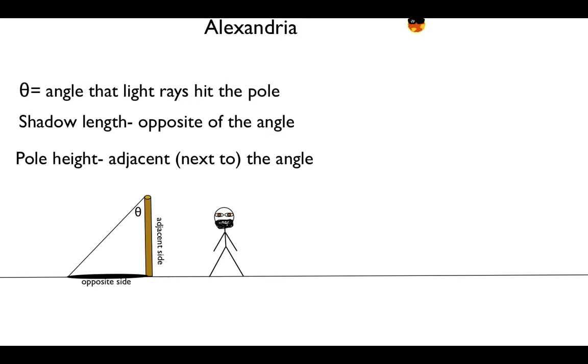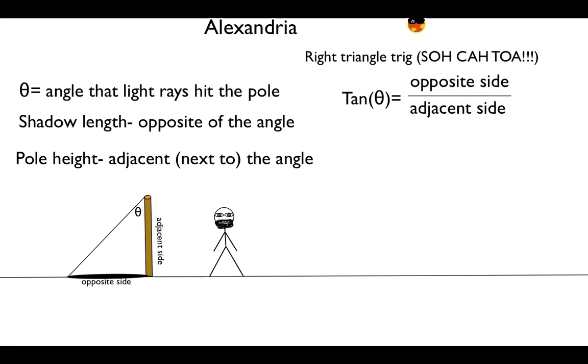I don't know what measurements he actually used. I just decided to assume the pole was about six feet tall. If that was the case, the shadow would have to be about 0.749 feet.